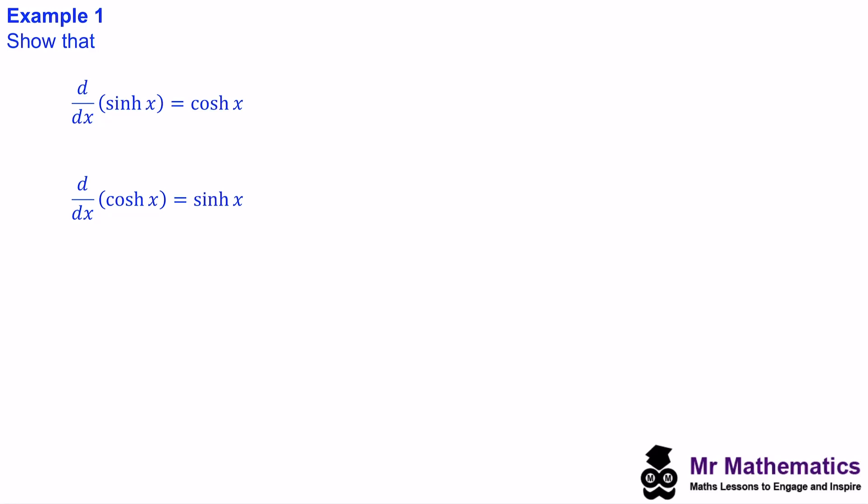Hello everyone. In this video we'll explore differentiating hyperbolic functions. We have three questions. In question one we'll look at proving the derivative of sinh(x) and cosh(x). In question two we'll use the chain rule, and in question three we'll look at applying the product and the quotient rule.